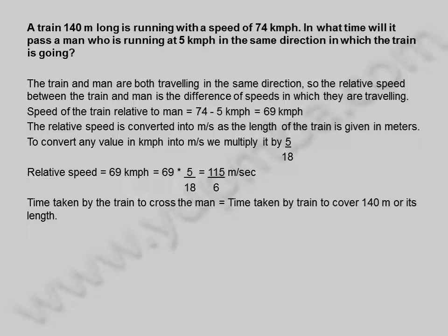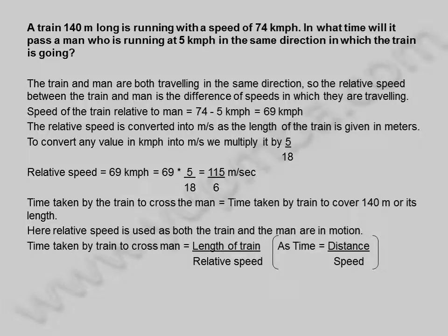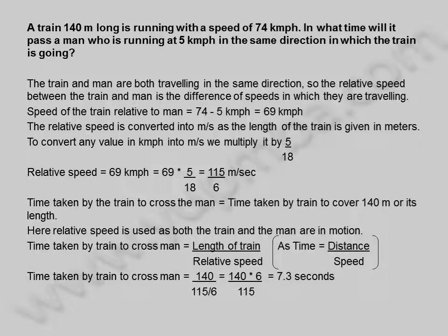Time taken by the train to cross the man is equal to the time taken by the train to cover 140 meters, or its length. Here relative speed is used as both the train and the man are in motion. Time taken by train to cross man is equal to length of train divided by relative speed, as time is equal to distance divided by speed.